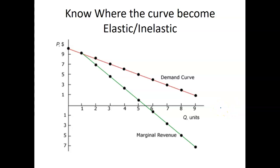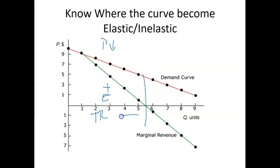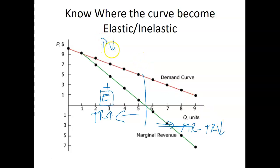We also use the total revenue test, more relevant for monopolistic competition and monopolies, to figure out when marginal revenue is positive. When marginal revenue is positive — this green curve — you're in the elastic range. With a downward-sloping demand curve, as we produce more units, price decreases. If marginal revenue is positive, total revenue is increasing in that range — price decreases but total revenue increases, so we are elastic. When marginal revenue is negative, total revenue is decreasing; price and total revenue move in the same direction, so we are inelastic. At zero marginal revenue, we are unit elastic.